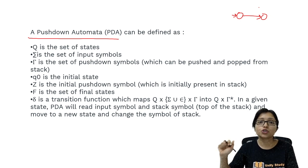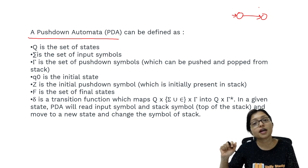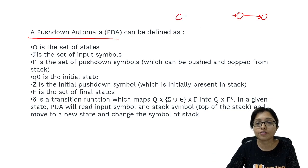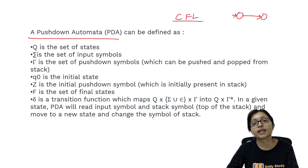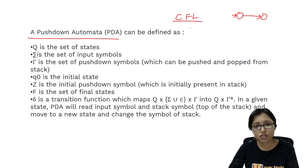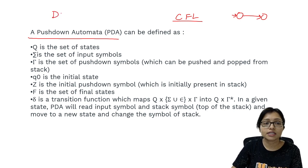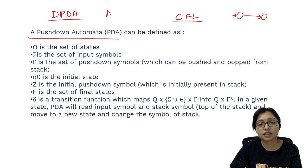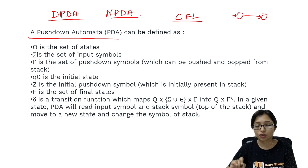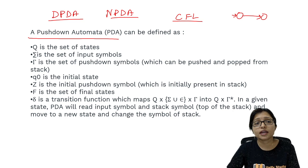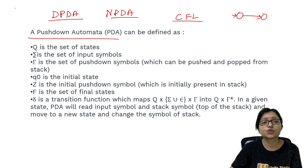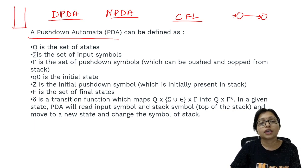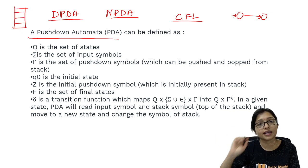Push down automata is required to understand the CFL language, that is the context free language. There are two types of push down automata. One is DPDA, that is deterministic push down automata. Another is NPDA, that is non-deterministic push down automata. The difference is there in deterministic and both are using stack. We have to use stack here, and it is an infinite capacity stack.